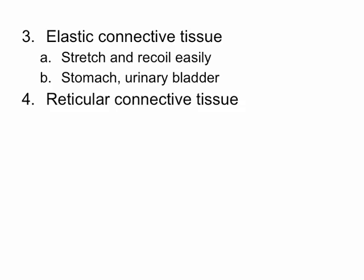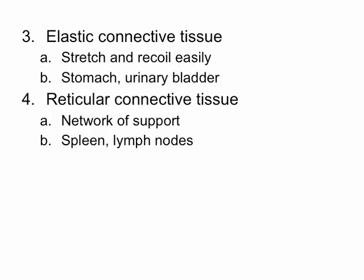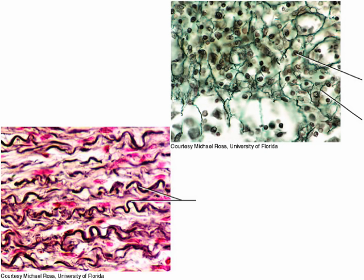Reticular connective tissue has a lot of reticular fibers and, as a result, forms a network of support. The spleen, as mentioned before, is a good example of where you can find reticular connective tissue, as well as in your lymph nodes. In the image, the bottom left shows elastic connective tissue and the top right shows reticular connective tissue.